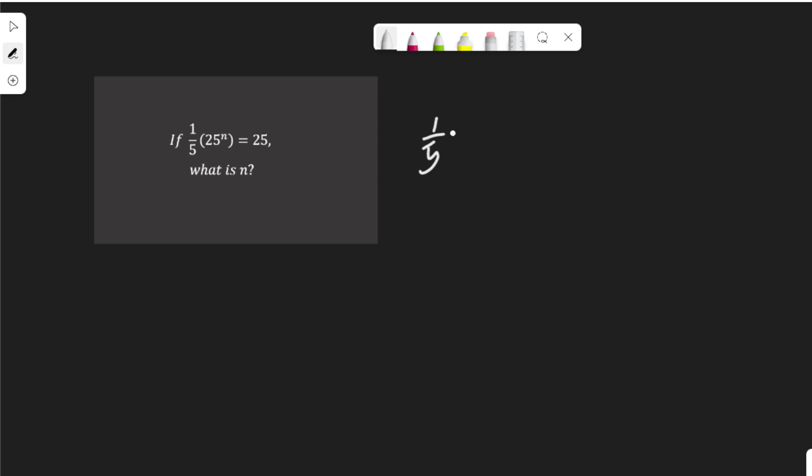1 over 5 multiplied by 25 to the power of n is equal to 25. Let's start by dividing both sides by 1 over 5, so you can clear this 1 over 5. And this gives us 25 to the power of n equal to 25 times 5.